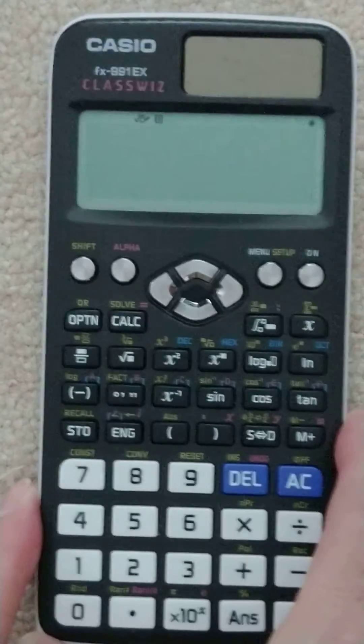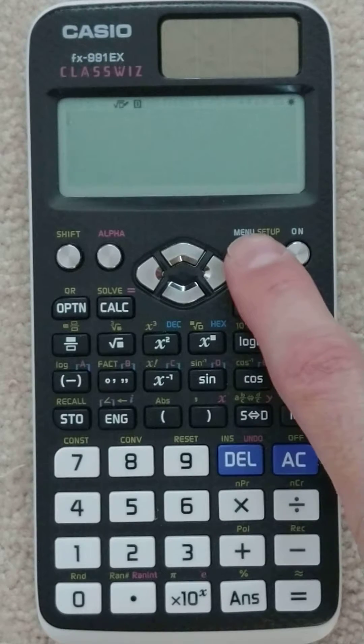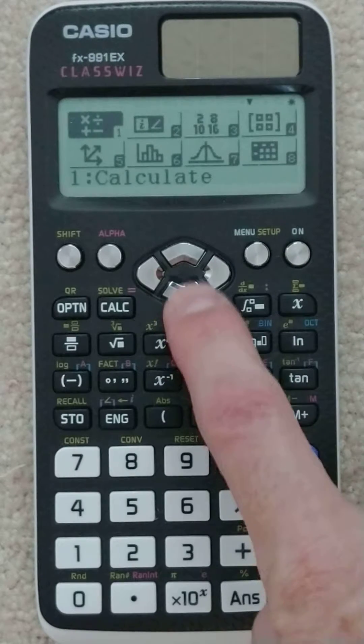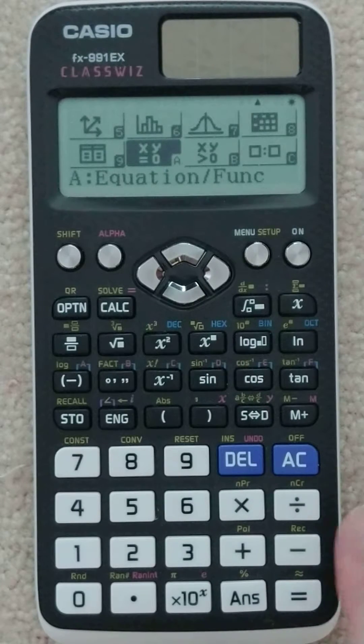Let's do this on the Casio. Alright, so we come in here, and the very first thing on the Casio you have to do is you have to be in the right menu. I'm going to hit the menu key, I'm going to go down, down, and then over to this right here, equation slash function.